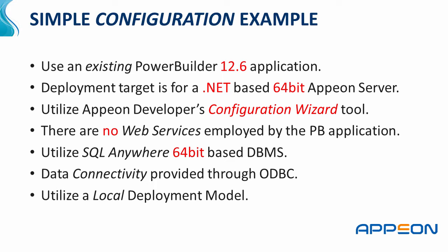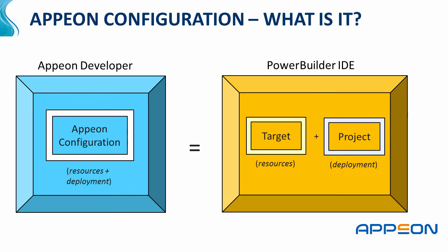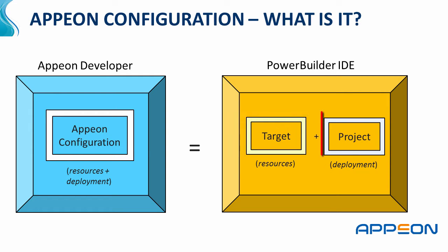In the real world, it could be on different machines altogether. So what is an Appeon configuration? If you're coming from the PowerBuilder IDE, you probably know that you have a target which has a list of all the resources — PowerBuilder libraries — that are needed and all the classes inside those that compose your application. If you want to deploy it, you would create a project object class and then specify all the properties needed for the deployment model — for example, a native Win32, now Win64 in PowerBuilder 12.6, a smart client, could be a WinForm, could be web services. So the project determines the deployment model.